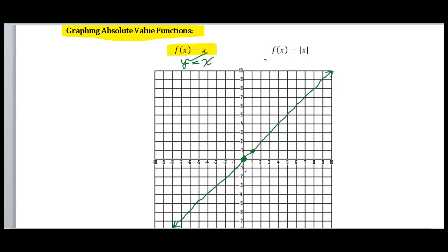Now, when I look at f of x equals absolute value of x, that means take those x values and take the absolute value of them. Remember, absolute value is the distance from zero. So whenever I input an x value, I'm going to almost get the same thing out. For instance, if I plug in one, I'm going to get one, because the absolute value of one is one. If I plug in two for x, I get two. If I plug in three for x, well, absolute value of three is three. So this right-hand side is going to be the same.